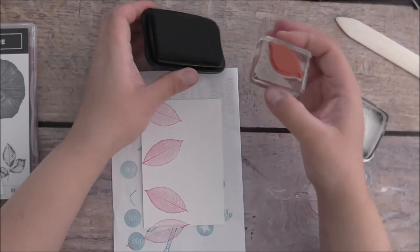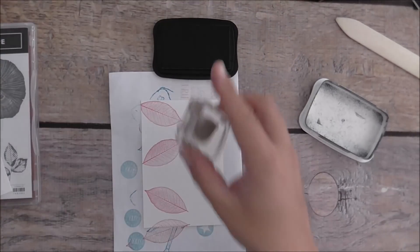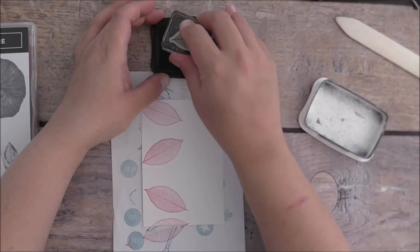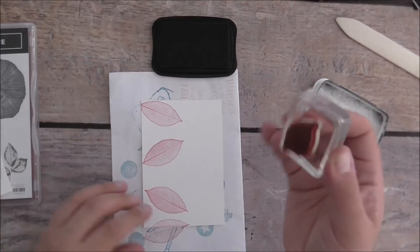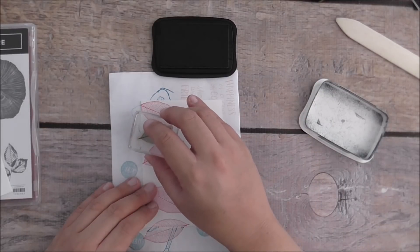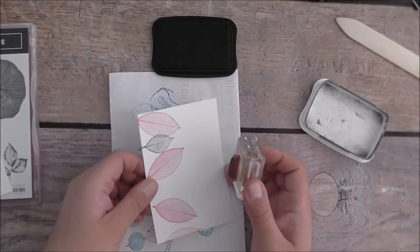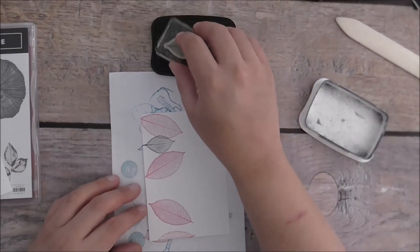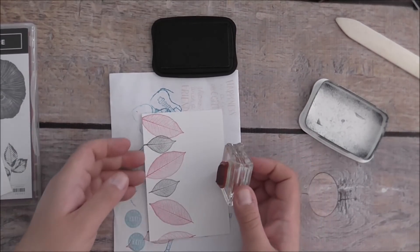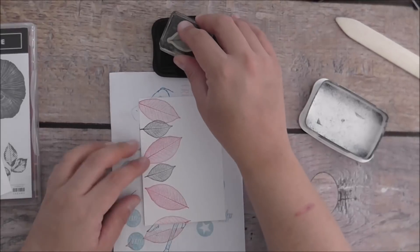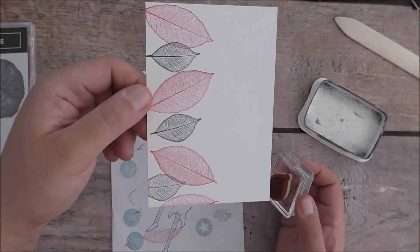I'm going to use the smaller leaf - you get a larger leaf and a smaller leaf. I'm just going to ink that up in Memento ink and stamp like so. That turned out really pretty, I love that.